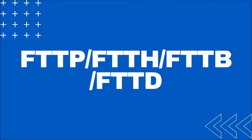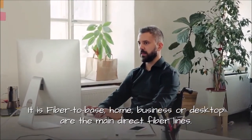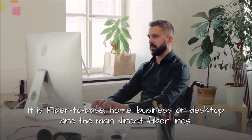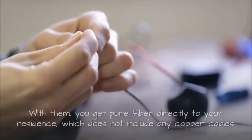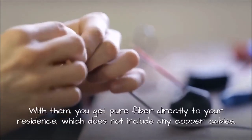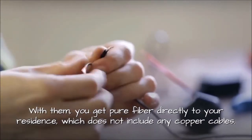FTTP, FTTH, FTTB, FTTD: Fiber to premises, home, business, or desktop are the most direct fiber lines. With them, you get pure fiber directly to your residence, which does not include any copper cables. These are also the most expensive fiber connections for ISPs.